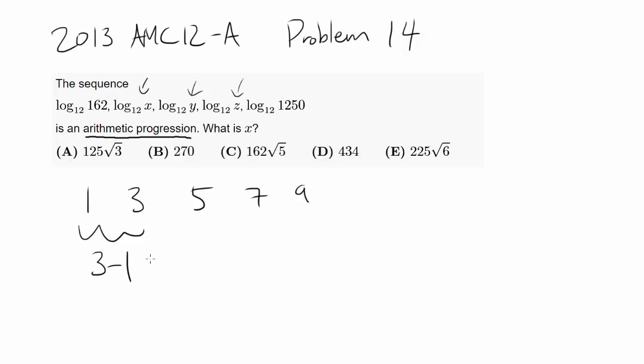So in this case, 3 minus 1 is 2, 5 minus 3 is 2, 7 minus 5 is 2, 9 minus 7 is 2. All of them are exactly the same. Because we're adding the same thing each time, the difference of consecutive terms has to be the same. Maybe we can use that.